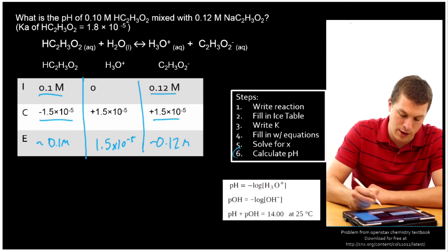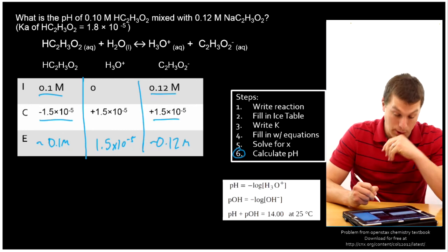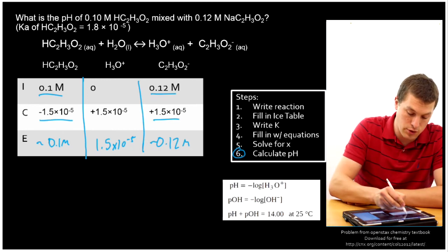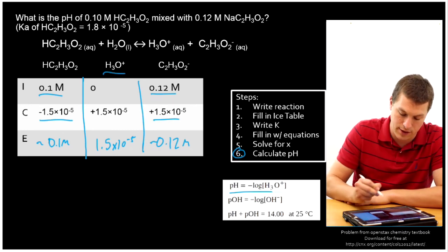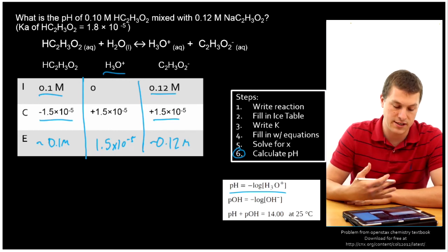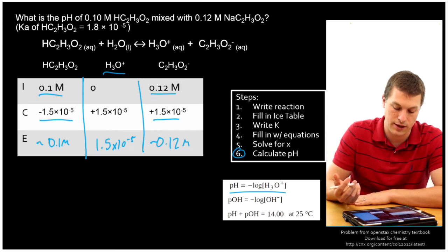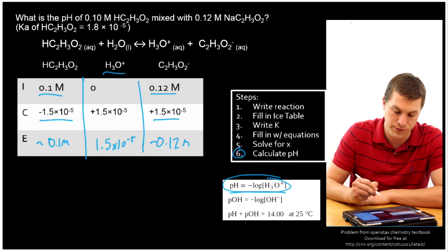So how do we get the pH? We've solved for X and now our last step is calculate the pH. Well, we have now, notice, the concentration of our hydronium ions. That's exactly what I need to calculate the pH. So the whole reason we set up the ICE table, the whole reason we solve for X is so we could calculate pH with this equation down here.